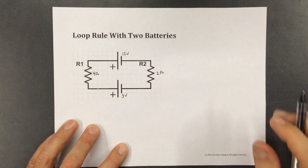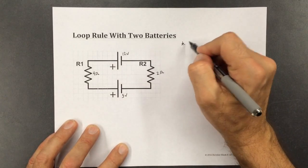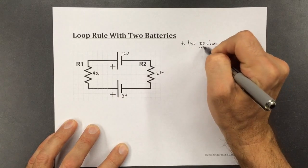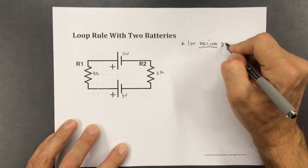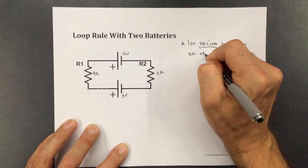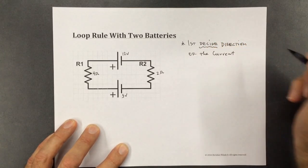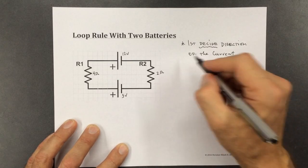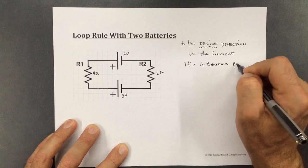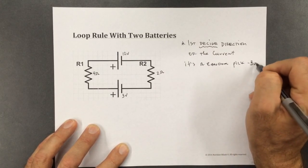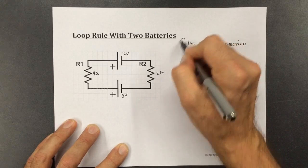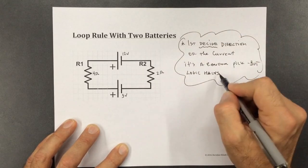Okay, so what we need to do is we need to decide, so first decide the direction of the current. Now this is going to be a random pick, so it's a random pick. But logic helps.